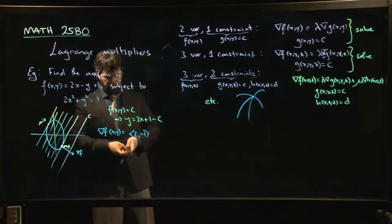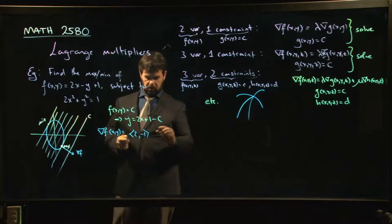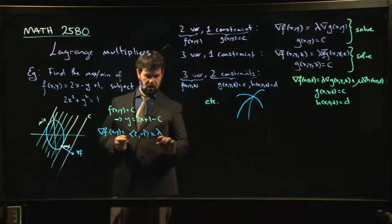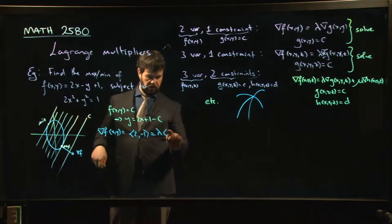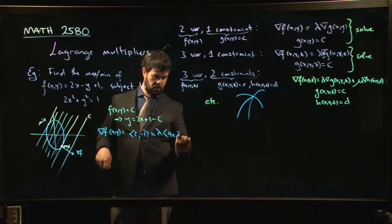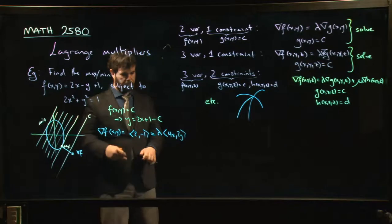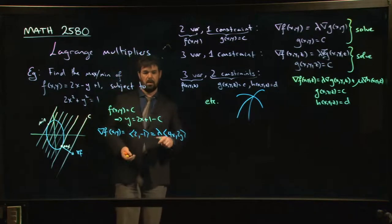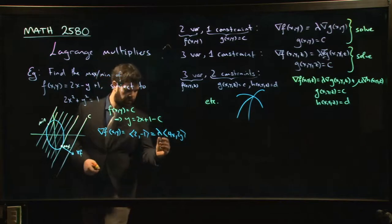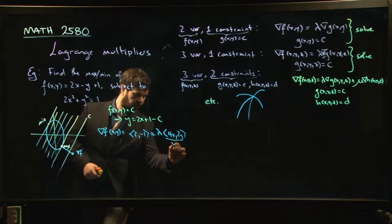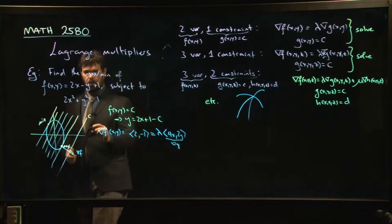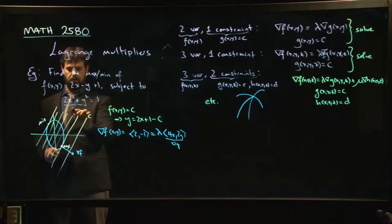So I want this to be equal to lambda times the gradient of g, which is 4x and 2y. So this gives me a pair of equations. So this is the gradient of g where g is this function here.